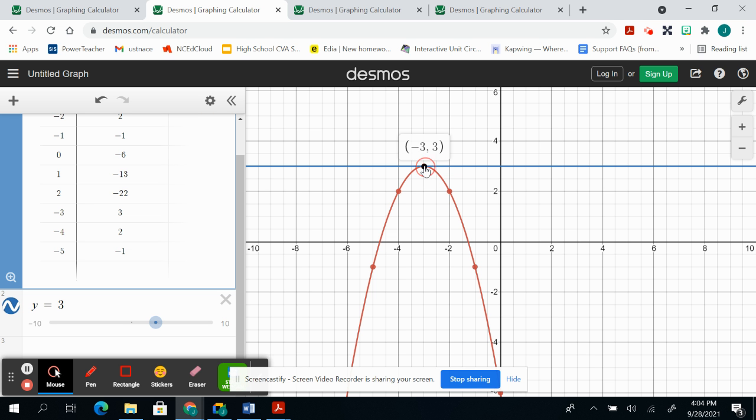And then the important point or the solution to this system is going to be one solution, negative three, three, because that is the only place that it touches the linear and the quadratic. So the maximum of this quadratic touches the linear at negative three, three. That would be your solution for this one. So only one solution on this one.